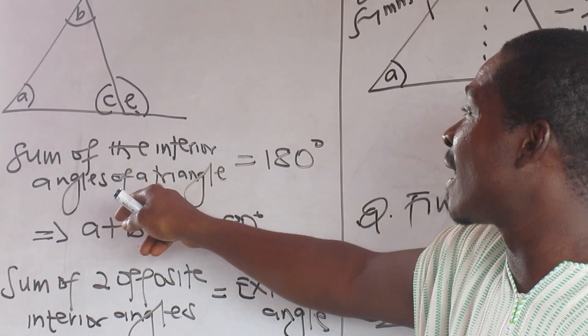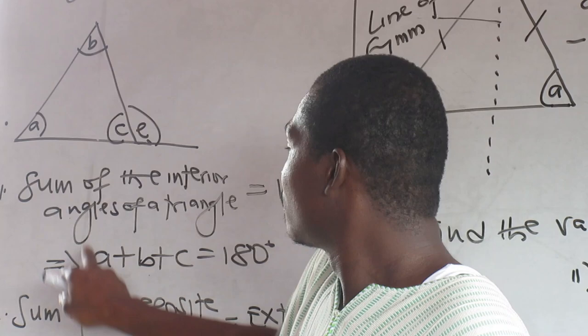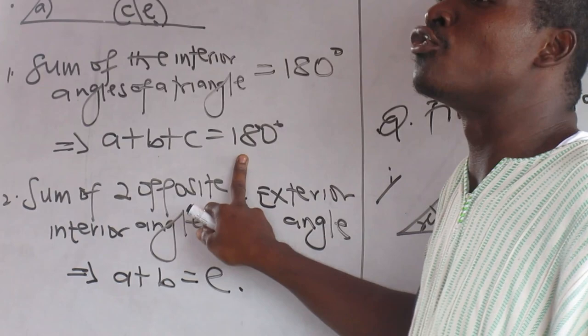The sum of the interior angles of the triangle is equal to 180. She'll give me 180. Property 1.